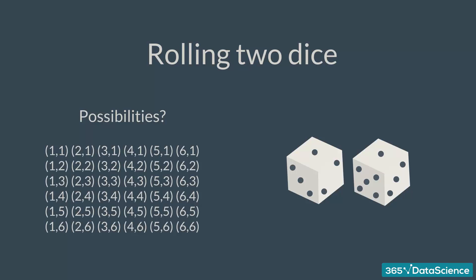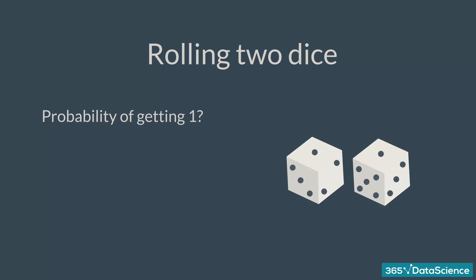We are interested in the sum of two dice. So what is the probability of getting a sum of one? It is zero, as this event is impossible. What is the probability of getting a sum of two? There is only one combination that would give us the sum of two, when both dice are equal to one. So, one out of 36 total outcomes, or 0.03.